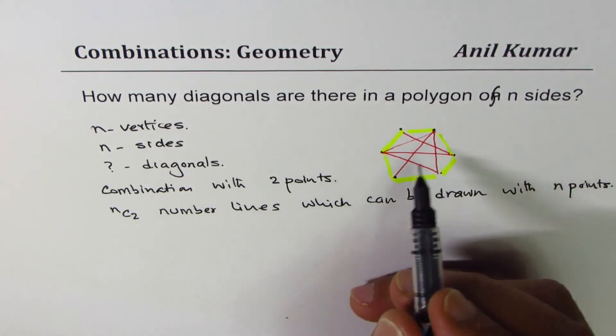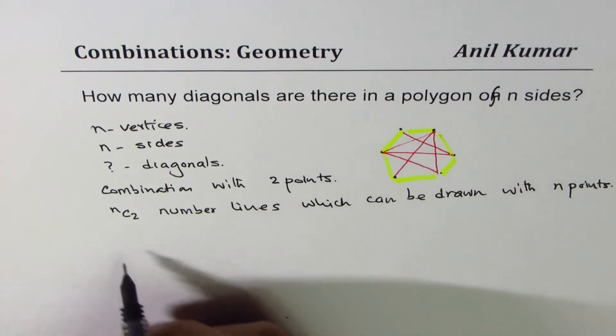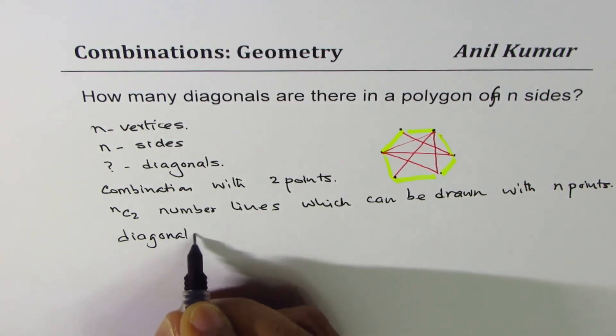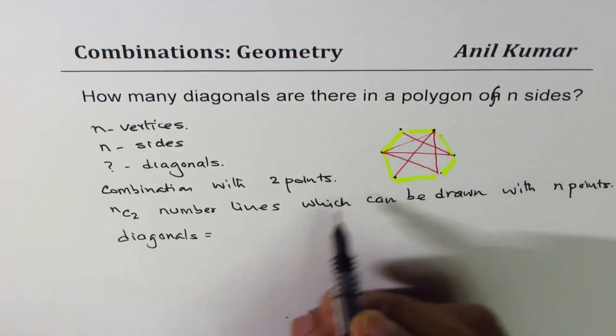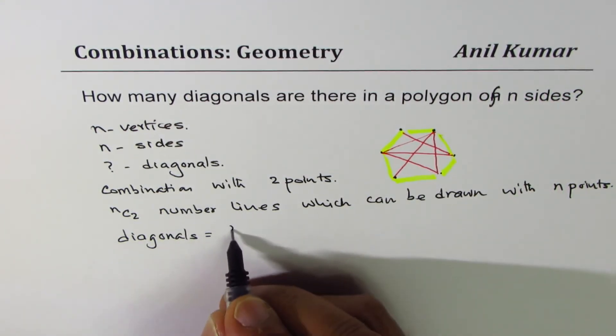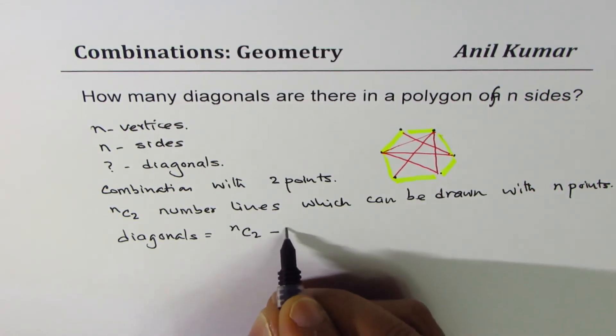So all of these combinations, you find how many are diagonals. That is the question. So the diagonals will be total number of lines minus the edges, which are n. So diagonals are nC2 minus n.